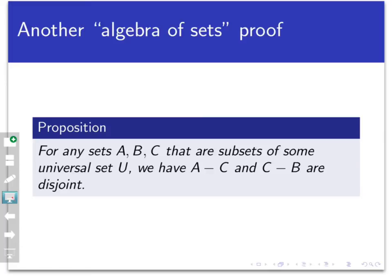In an earlier video, we said that oftentimes if we're proving two sets are disjoint, we do this by contradiction. We suppose that they are not disjoint, and so there's something in their intersection, and then derive a contradiction from that. But we're going to do this differently now using the algebra of sets.